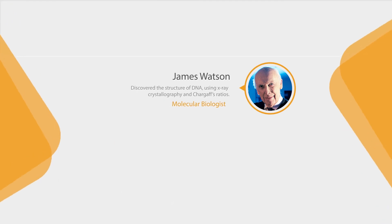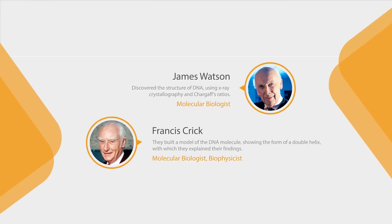In 1953, scientists James Watson and Francis Crick, who were working at a laboratory in Cambridge, discovered the structure of DNA using X-ray crystallography and Chargaff ratios. These ratios state that in the DNA of any given species, the ratio of adenine and thymine is equal, as is the ratio of cytosine and guanine. They built a model of the DNA molecule showing the form of a double helix with which they explained their findings.